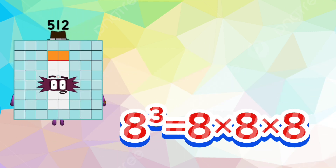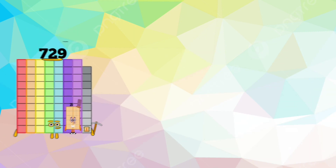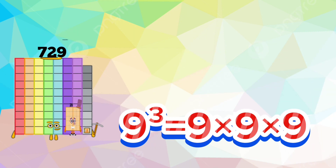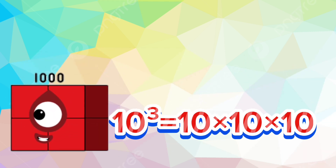Five-hundred-twelve: eight cube is eight times eight times eight. Seven-hundred-twenty-nine: nine cube is nine times nine times nine. One-thousand: ten cube is ten times ten times ten.